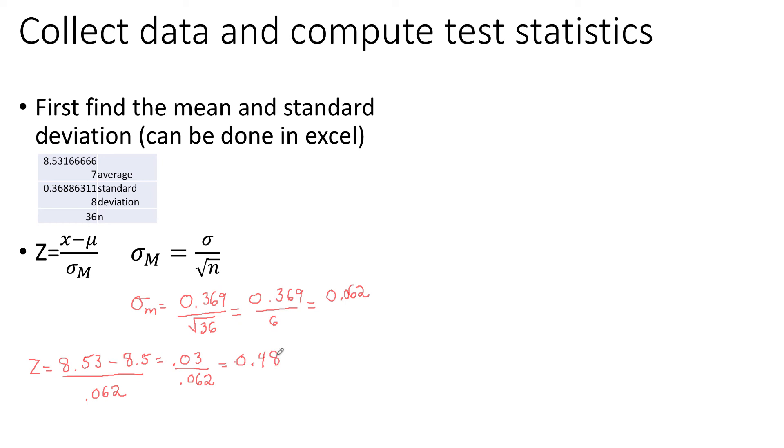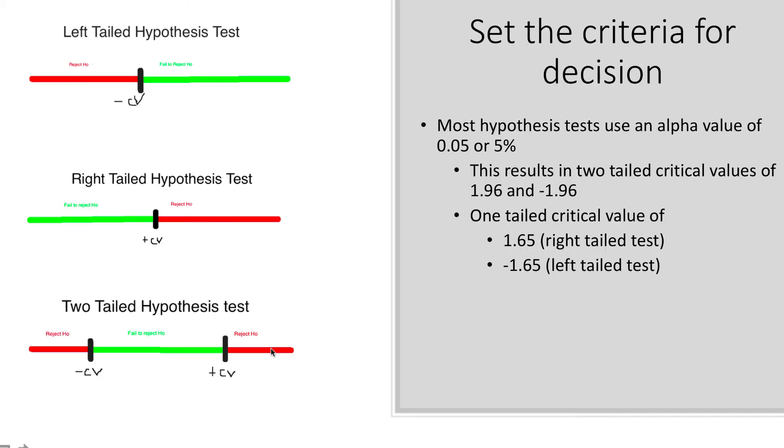Keep that value in mind, because we're going to need it to make a decision, which is our last step. I find it easiest to make a decision using this little picture right here. I have a two-tailed hypothesis test, which means that I need to use the lower diagram.